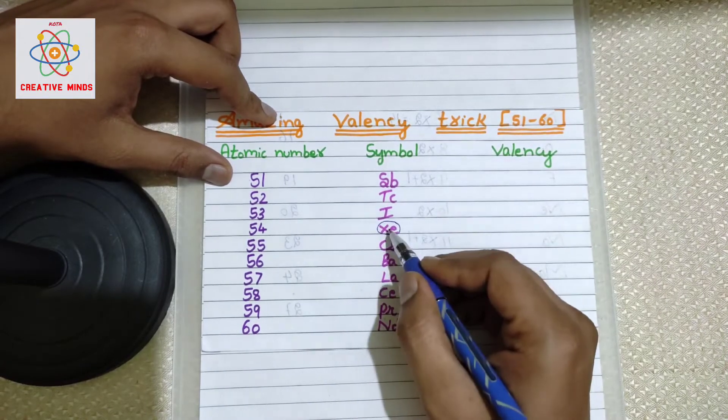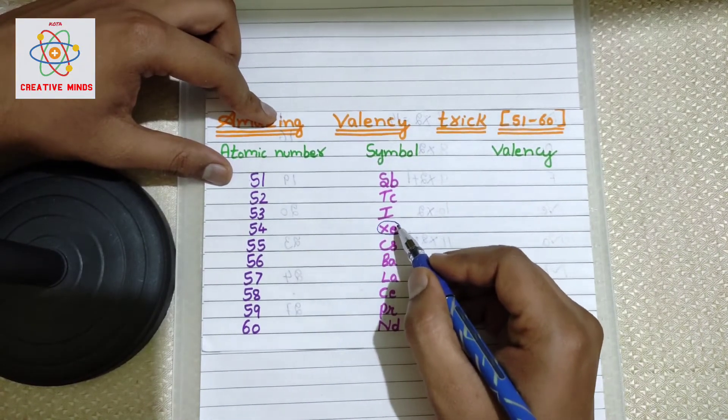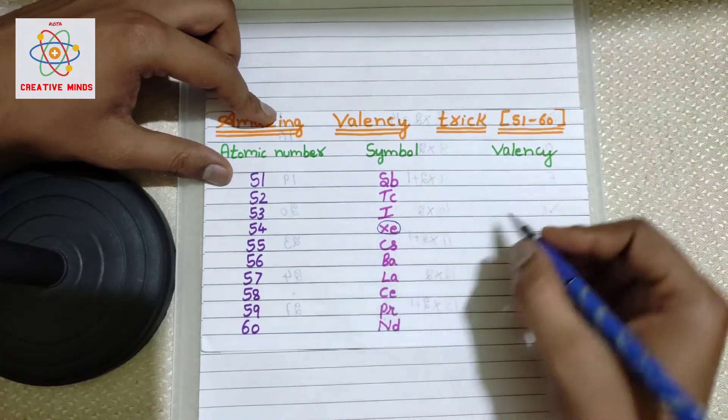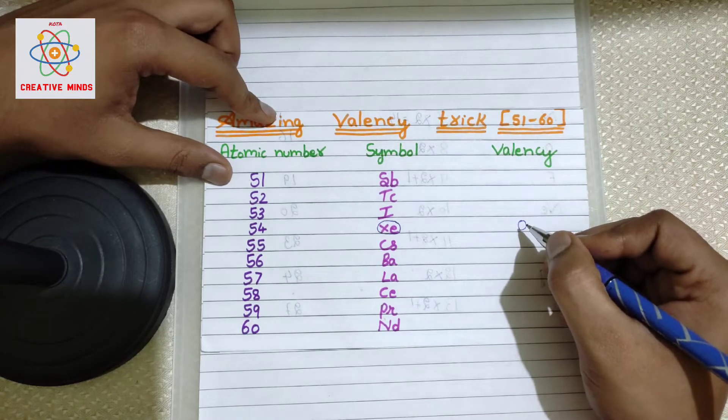Now, among atomic numbers 51 to 60, we will be getting a noble gas. As you all might be knowing already, the valency of a noble gas will always be zero because it's an unreactive or inert gas, a noble element.